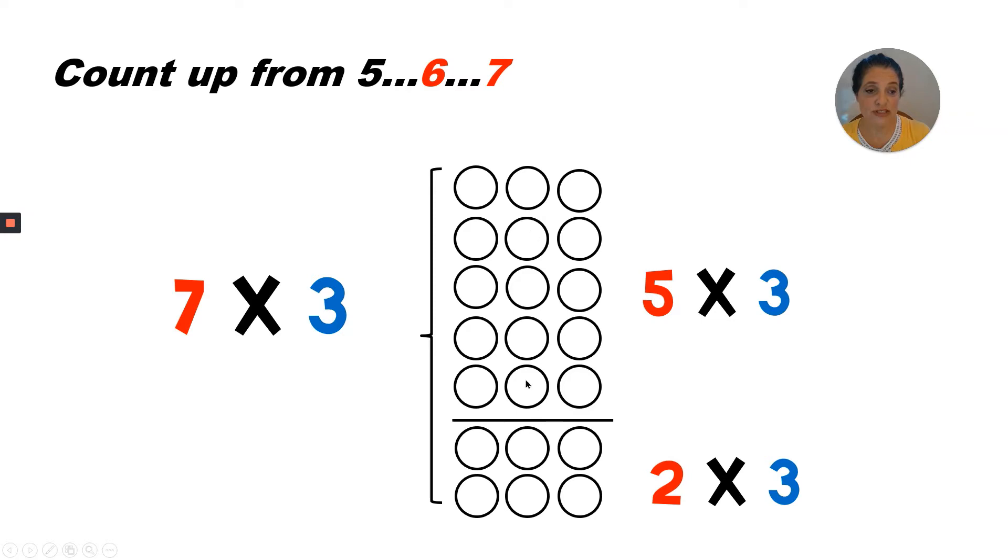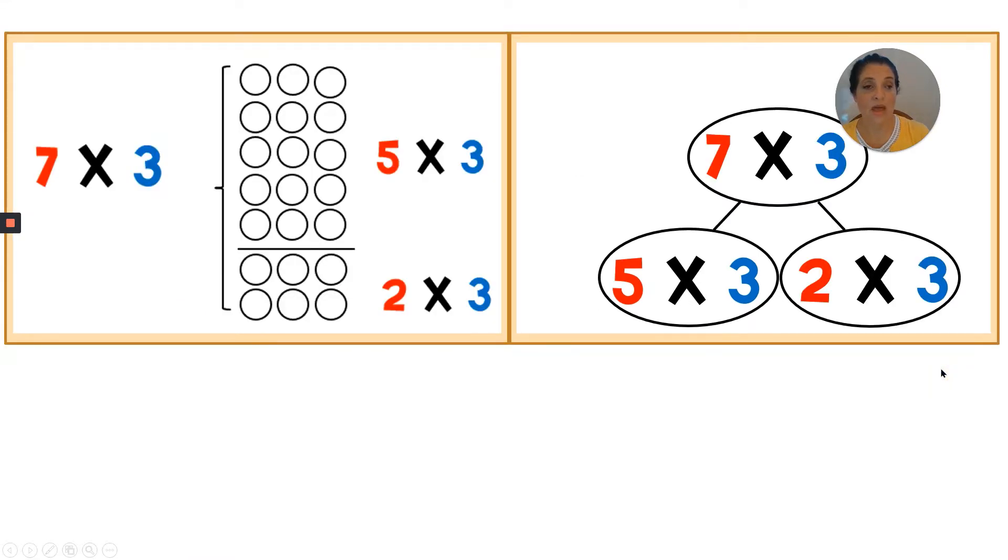So now we have seven rows of three for the entire array. The first five rows would be expressed as five times three. Under that, we've added two more rows and that's expressed as two times three.